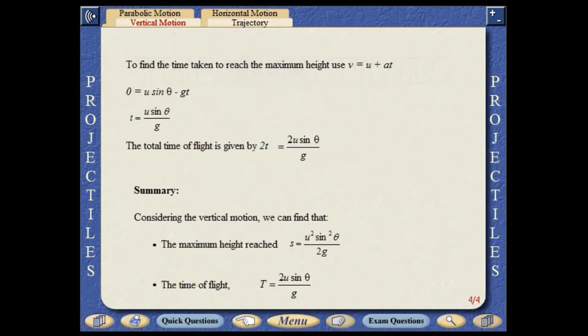The time taken to reach the maximum height can be found by using the equation V equals U plus AT. The total time of flight is double the time taken to reach the maximum height.